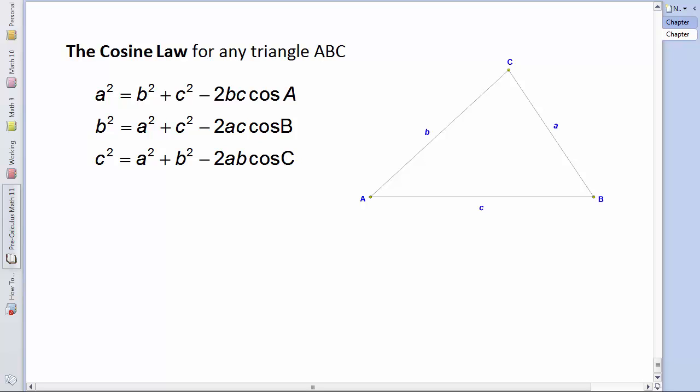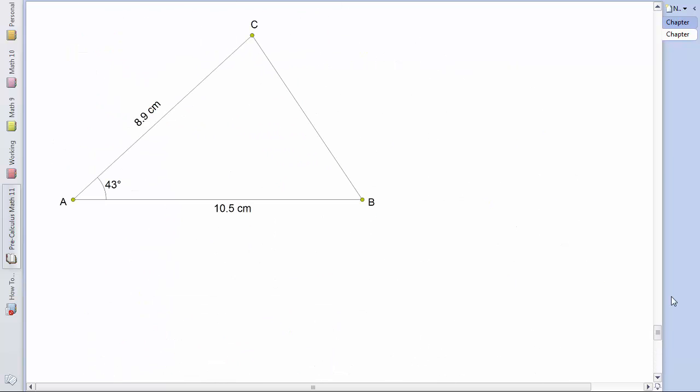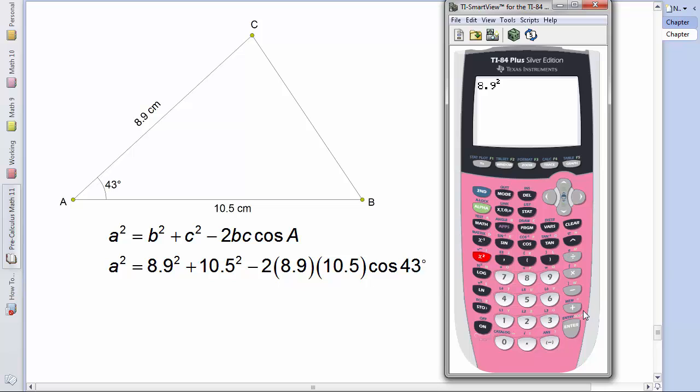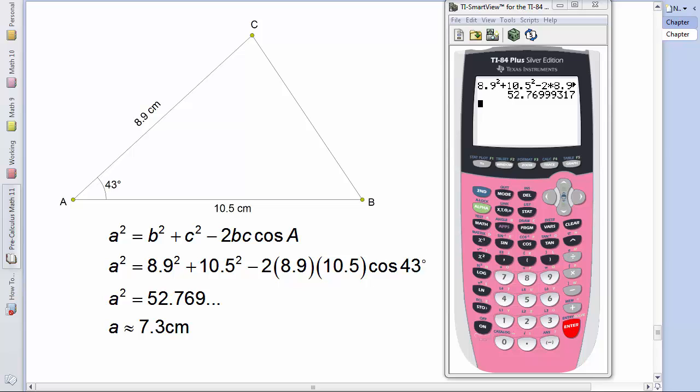Well, now that we know this, let's go back up and solve the original question. In this triangle, we want to solve for side A. So let's grab the cosine law as we know it. And when we substitute in the known values for B and C and angle A, we've got 8.9 squared plus 10.5 squared and so on. Now we want to get our calculator and type this in. So we get A squared is 52.76 etc., which we'll round off to A is approximately 7.3 centimeters.